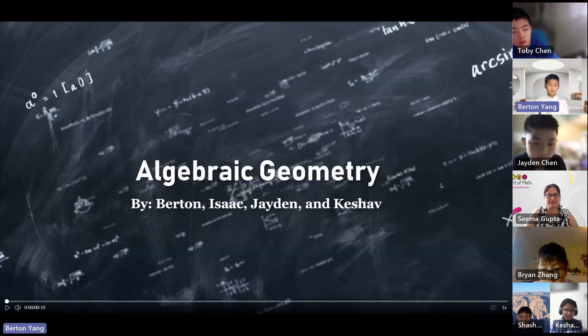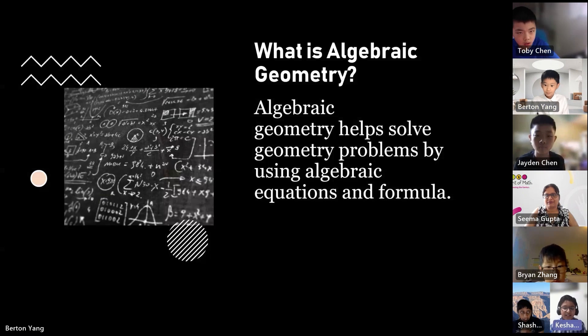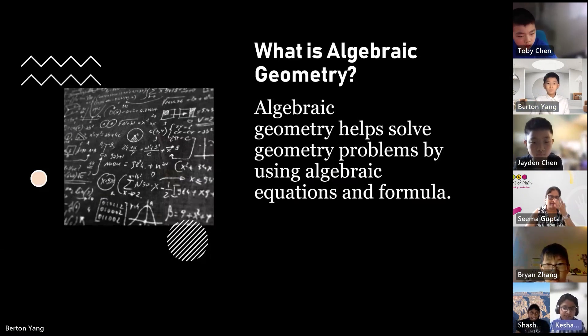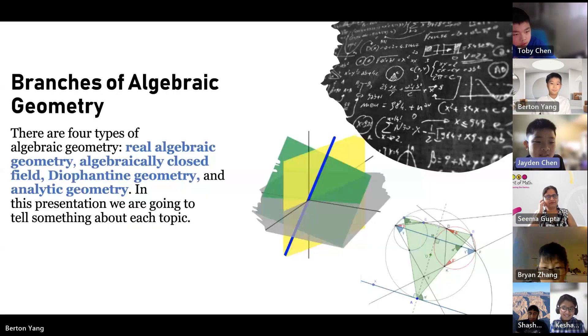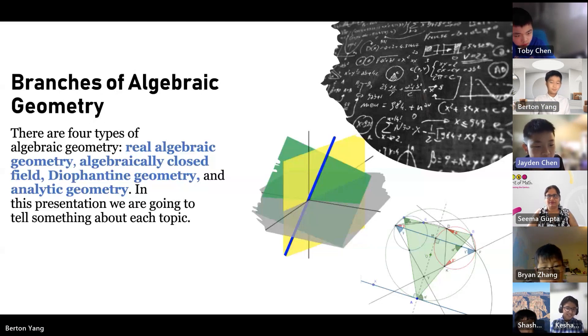Algebraic Geometry by Burton, Isaac, Kate, Jaden, and Kieshev. What is algebraic geometry? Algebraic geometry helps solve geometry problems by using algebraic equations and formulas. Branches of algebraic geometry. There are four types of algebraic geometry.